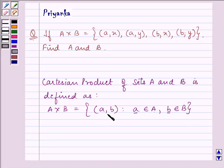Alternatively, we can say that the first element of the ordered pair belongs to set A, and the second element of the ordered pair belongs to set B.